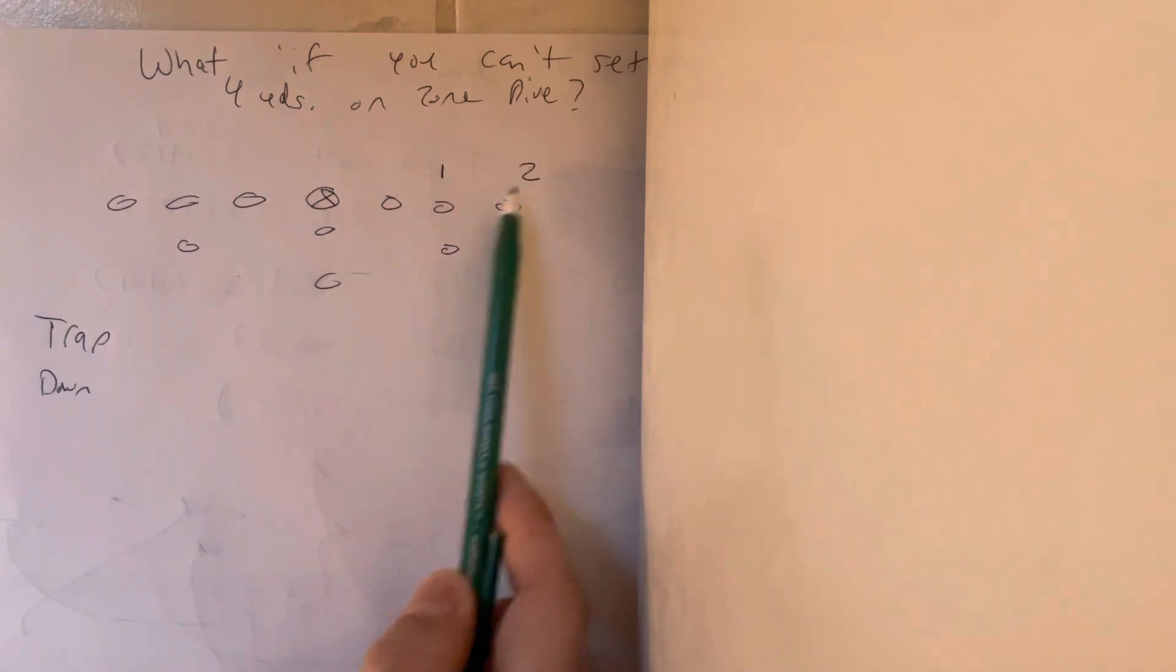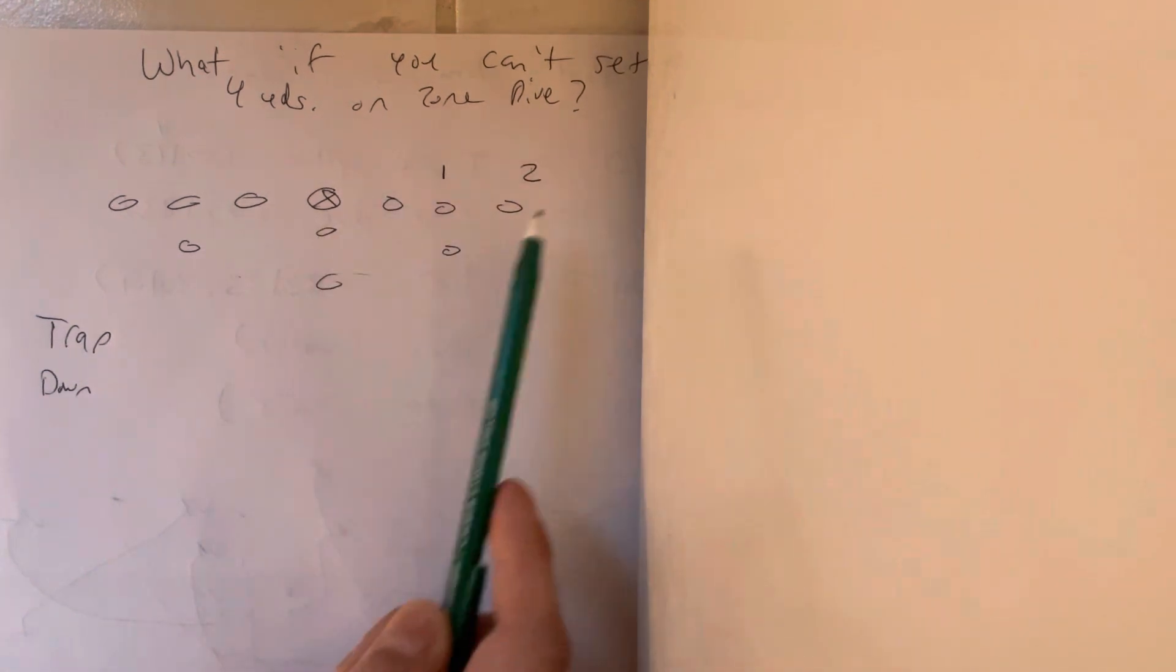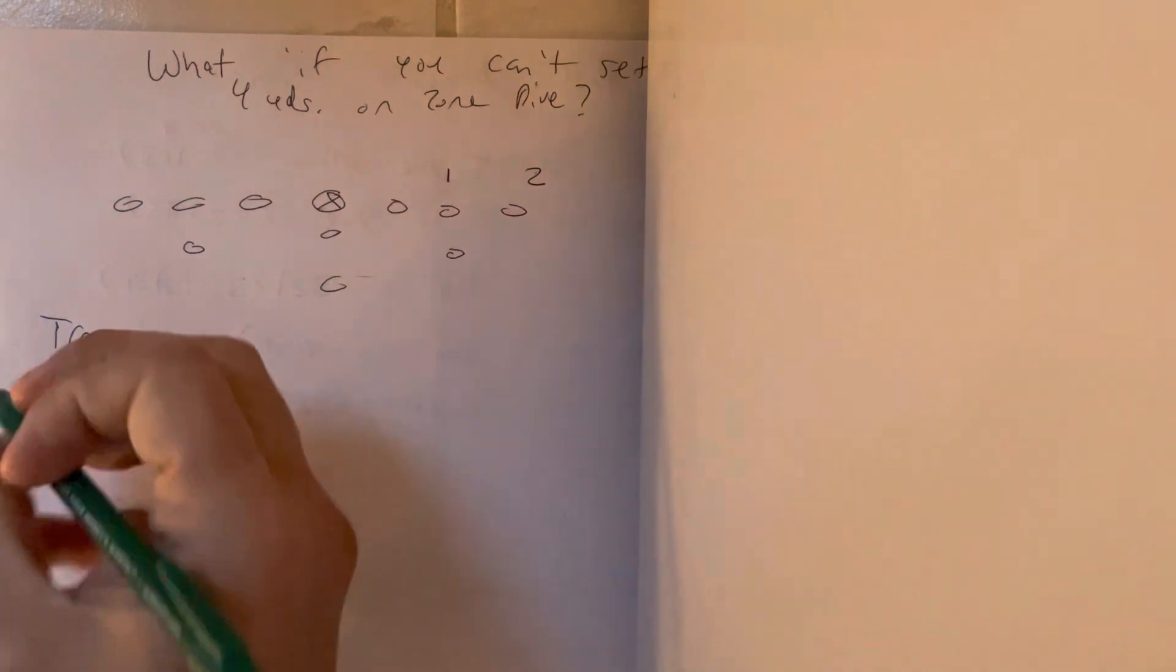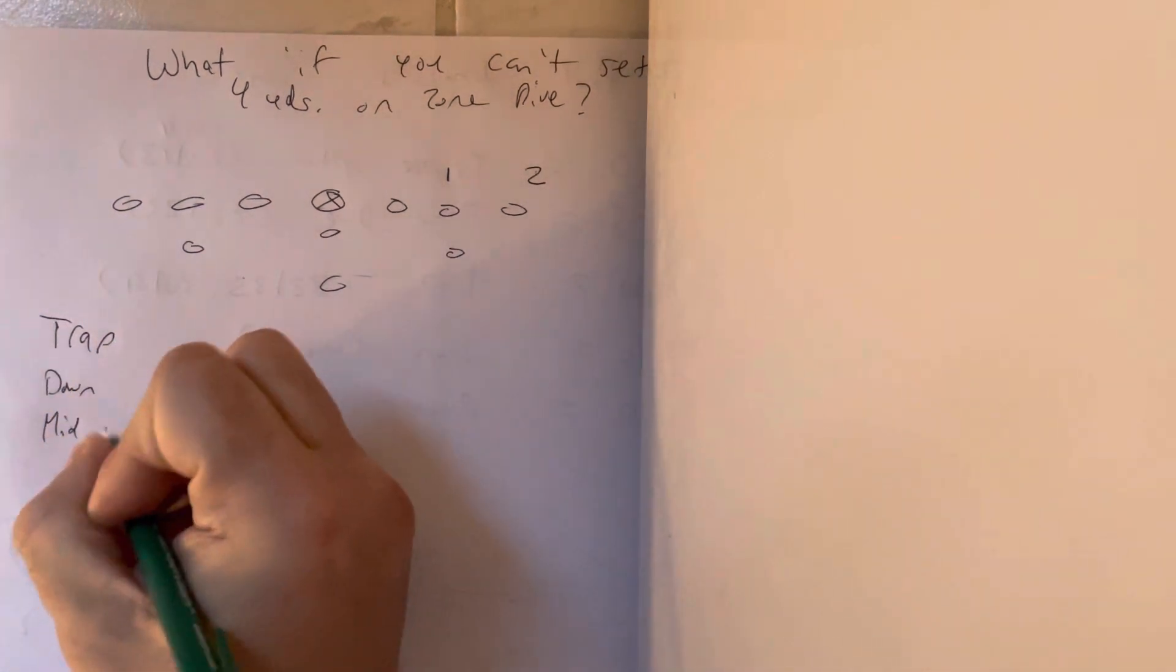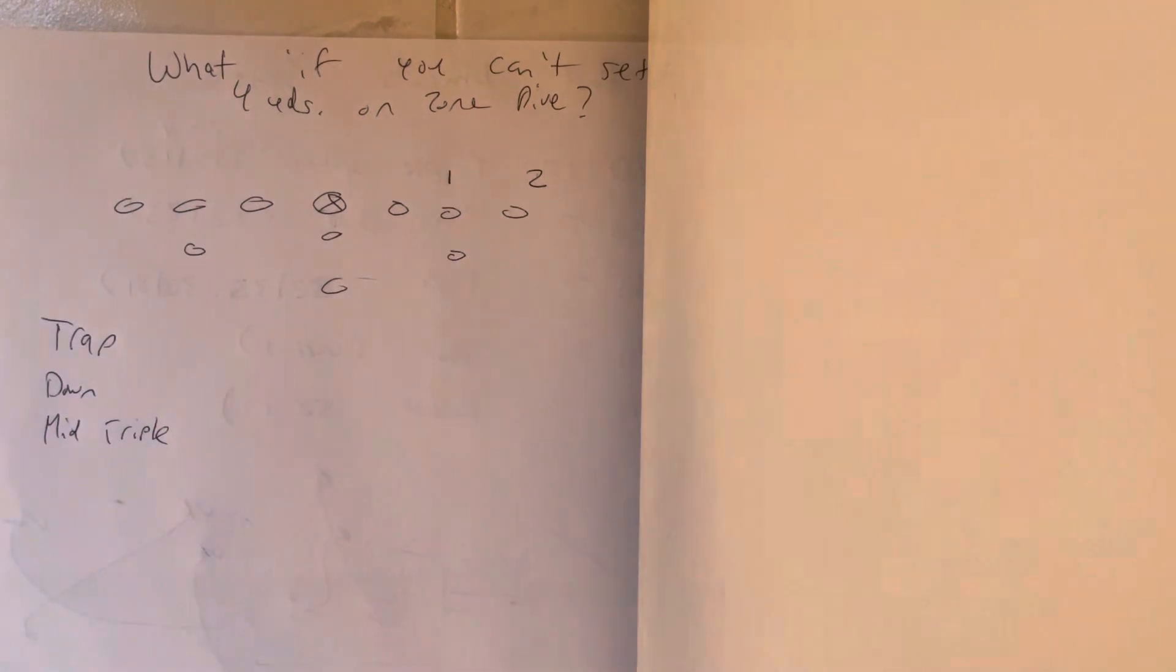But if one takes the dive and two takes the quarterback, you're going to run mid-triple because basically it becomes a toss sweep. So that's mid-triple. All right. So far, so good.